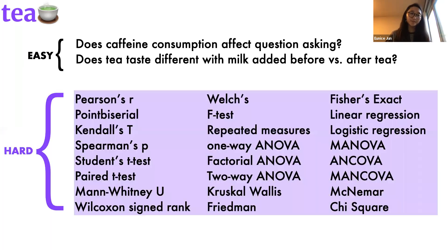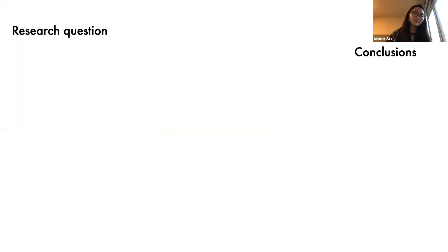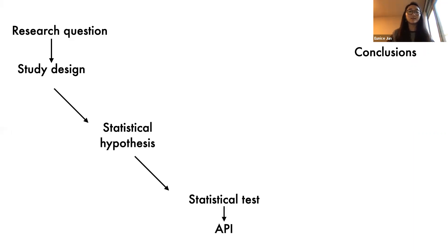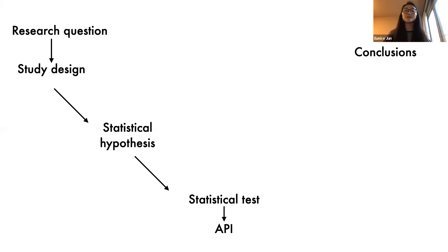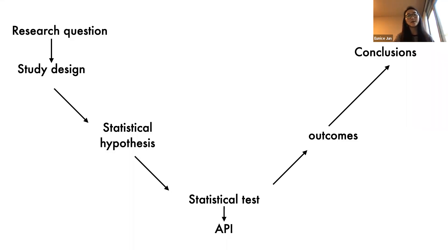You might ask: do we really need another language or tool for data analysis? We already have R and Python — aren't they enough? To further motivate TEA, let me illustrate a common workflow. Data scientists often start with a research question and want to arrive at conclusions that answer those exact questions. They collect data, identify appropriate statistical hypotheses — such as whether to care about differences in means or shifts in distributions — choose an appropriate statistical test, select a specific API implementation, execute the test, get results, and then contextualize those outcomes to arrive at conclusions.